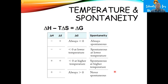So we have two extreme cases: delta H negative and delta S positive means always spontaneous; delta H positive and delta S negative means never spontaneous. Then we have the middle two cases that have what we call a crossover temperature — a point where the reaction either goes from non-spontaneous to spontaneous or spontaneous to non-spontaneous.